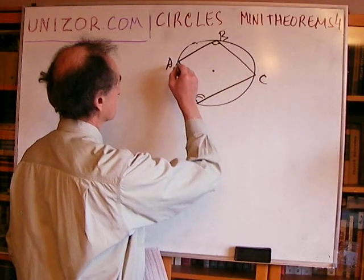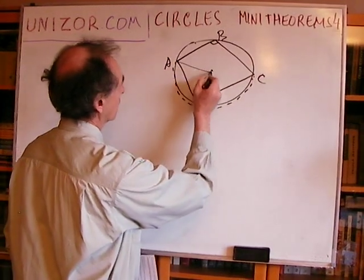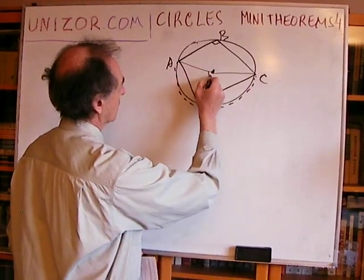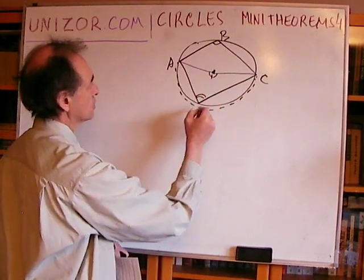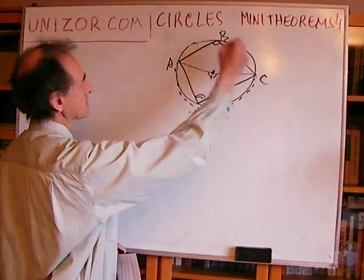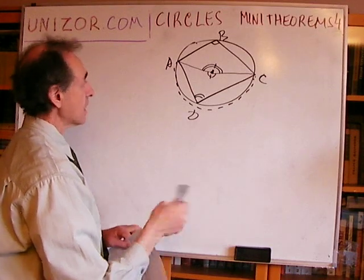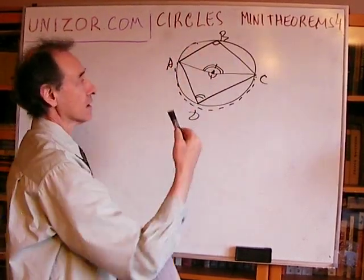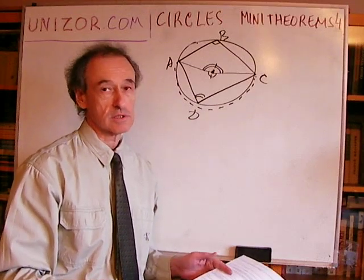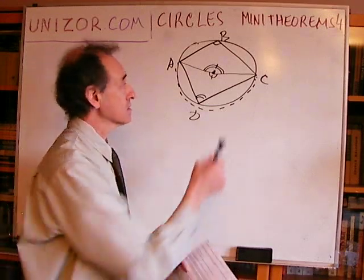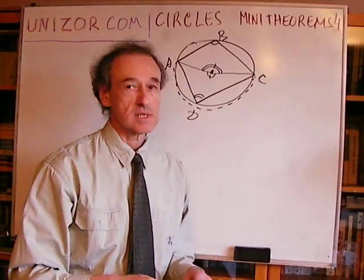In this case, the arc supports angle ABC, so what is the central angle? It's this one — the central angle which corresponds to the same arc. Now, opposite to this angle is angle ADC, supported by this arc, and the central angle supported by the same arc is this one. It is obvious that these two arcs make a full circle, and these two central angles sum to 360 degrees. So these two inscribed angles, each being half of the corresponding central angle, sum to 180 degrees.